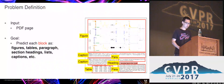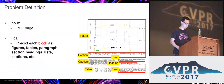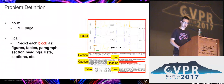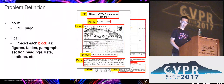Here is the problem definition. The input is a document page image, and our goal is to predict the semantic role for each area, such as figure, table, caption, and so on. On the right, you can see an example of the output.